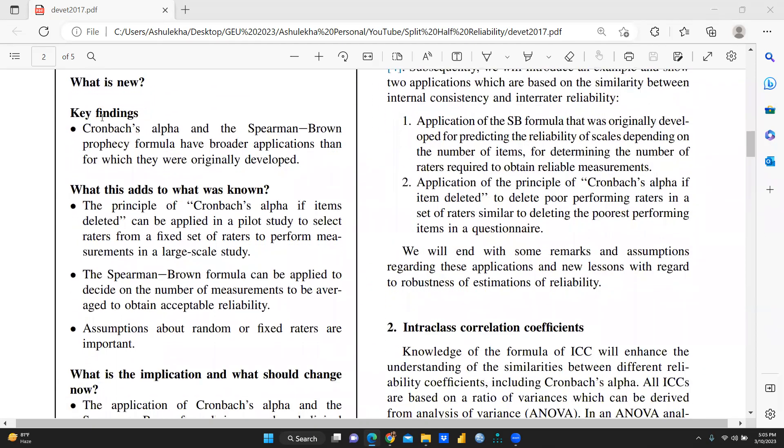Now we come to what's new. So what is new in this particular paper? You can see here, key findings: Cronbach's alpha and the Spearman-Brown prophecy formula have broader applications than for which they were originally developed. How come? The principle of Cronbach's alpha if items deleted can be applied in a pilot study to select raters from a fixed set of raters to perform measurement in a large-scale study. So we can select some for pilot study. The Spearman-Brown formula can be applied to decide on the number of measurements to be averaged to obtain acceptable reliability.